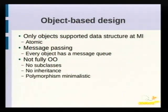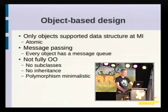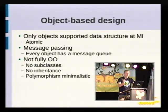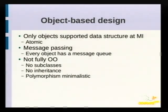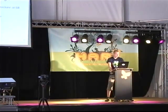The next principle is object-based design. The only supported data structure at the MI level is an object. This brings security advantages because you can't treat an object as an executable and you can't change parts of it, since objects are atomic. Objects communicate by passing messages, and every addressable object has a message queue attached. Almost everything on the system is an object, though it is not a fully object-oriented system as it lacks some OO features.